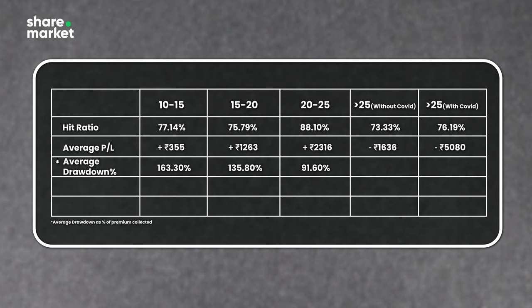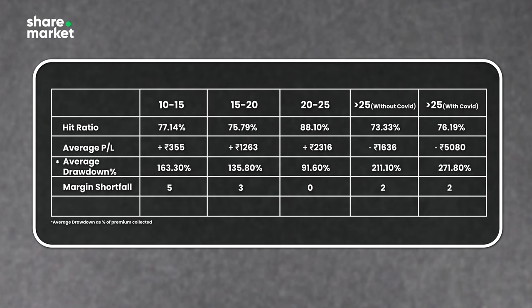The drawdown that was 92% for the 20-25 bucket increases to 211% in the greater than 25 bucket for non-COVID, and during COVID it increases to 271%. Another important metric is the number of times you fall short of margin money. In a low vol environment between 10 to 15, margin was short 5 times, reducing to 3 times between 15 to 20. Interestingly, between 20 to 25 there has not been a single instance in 10 years where extra money was needed. Above 25, the number of margin add-ons is two, both for non-COVID and COVID. In all the metrics there is a limiting condition — it improves up to a certain point and then falls.